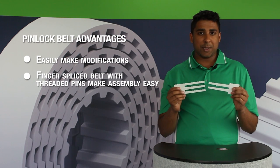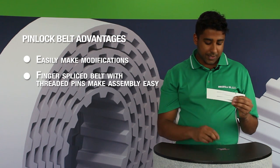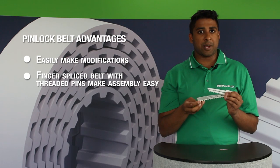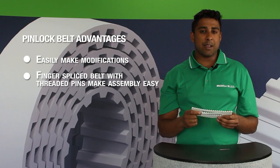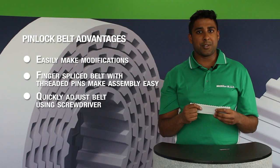This system uses a finger splice system in conjunction with holes in the belt teeth and threaded pins that insert into the teeth and connect your belt. This comes in a 6 and 10 pin variant and is super easy to assemble and disassemble using only a screwdriver.